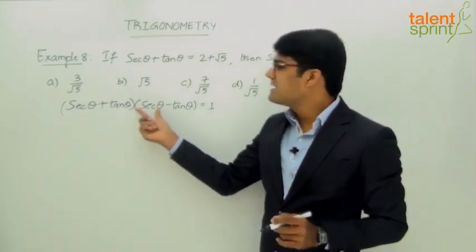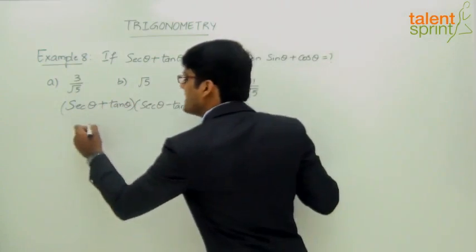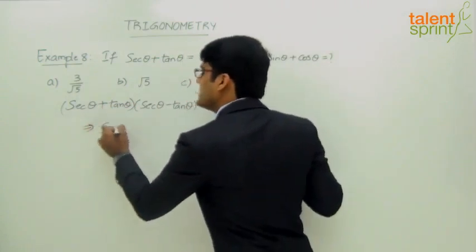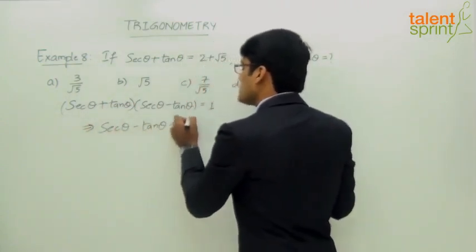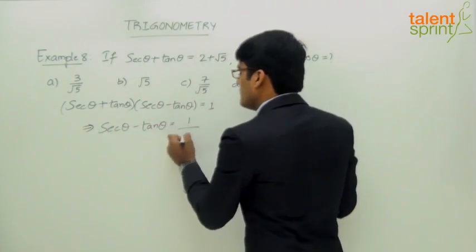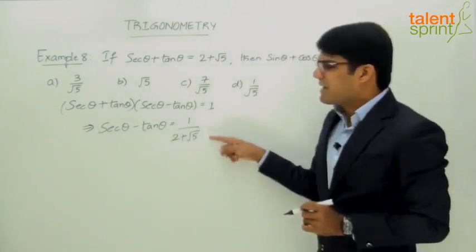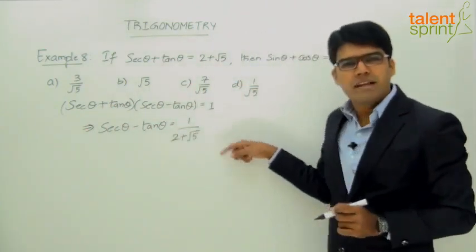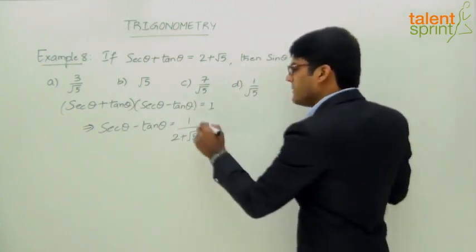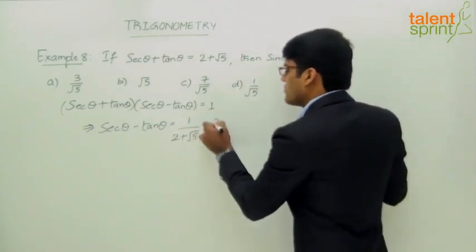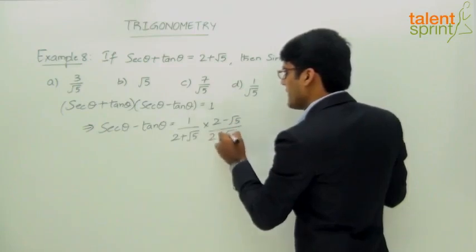Substituting, we get secant theta minus tan theta times (2 plus root 5) equals 1, so secant theta minus tan theta equals 1 by (2 plus root 5). We can rationalize this expression by multiplying and dividing by 2 minus root 5.